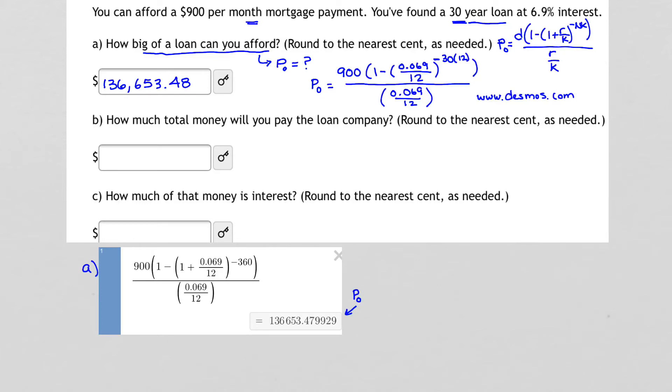Question B. How much total money will you pay the loan company? All right. So this amount in Part A is the amount of our loan. But you know money isn't free, so if we're going to get a loan from a company, they're going to charge us interest.